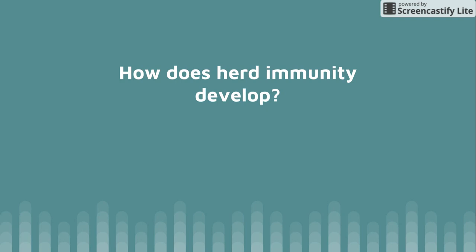So how does herd immunity develop? Remember from the previous video, herd immunity was when a bunch of people were either immune or vaccinated against something, and the few people that were not immune or not vaccinated would still be protected because everybody around them was protected. This only works if there are only a few people that are not vaccinated or immune.